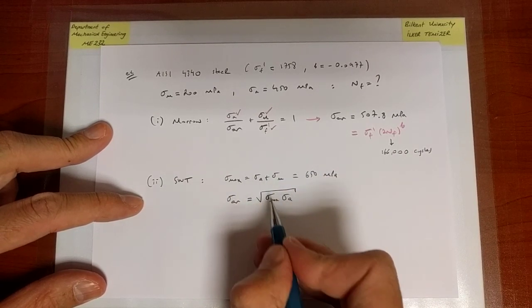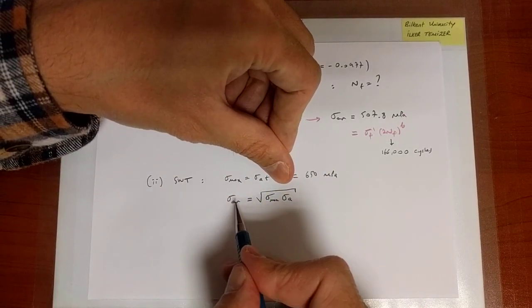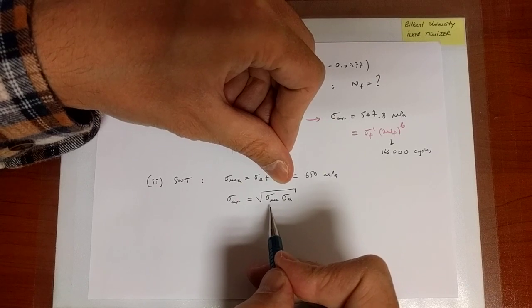So such that if sigma max is equal to sigma a, if sigma m is equal to zero, the outcome is sigma a. Sigma ar is equal to sigma a.